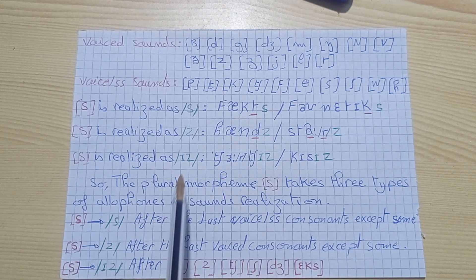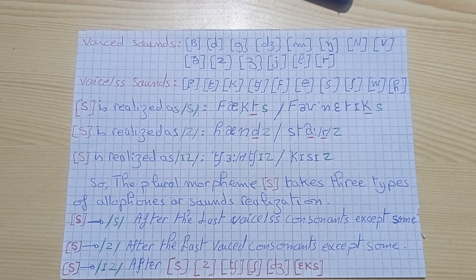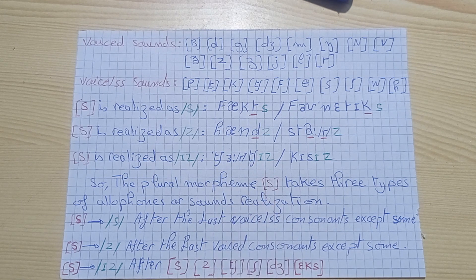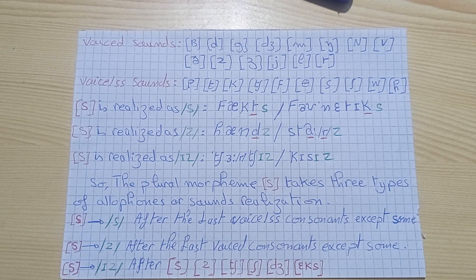S is realized as /ɪz/ when — for example — 'churches.' When we see the last sound CH, the S morpheme is pronounced as /ɪz/: 'churches,' not 'churchs' or 'churchss.' Similarly 'kisses' — the plural of the word 'kiss': the last sound is S, so we say 'kisses,' not 'kisss.' We say 'kisses.'